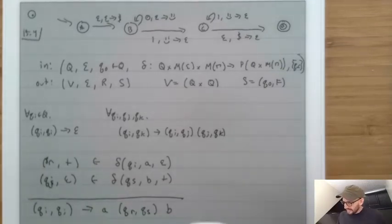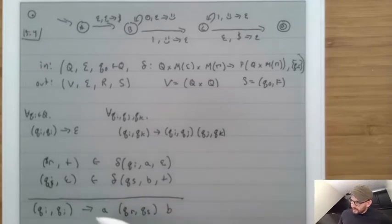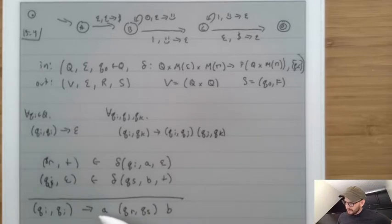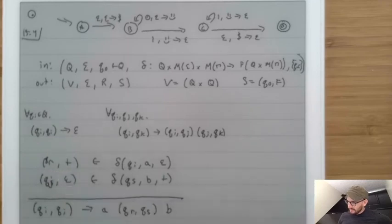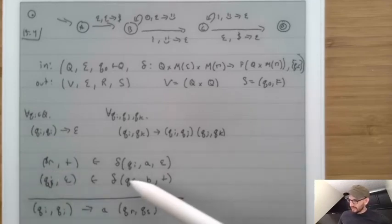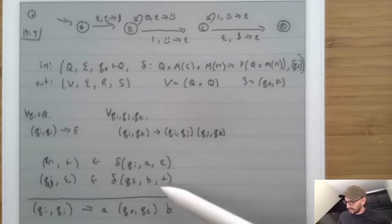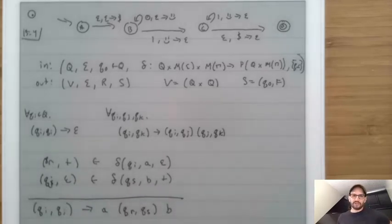What this rule basically says is: if when you are in state Qi and read A, this causes you to push T and go to Qr, then eventually inside Qs you'll see B which causes you to pop T, in which case you go to Qj.